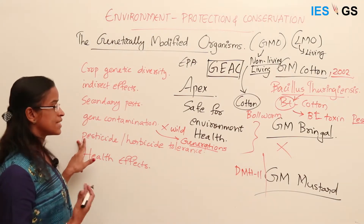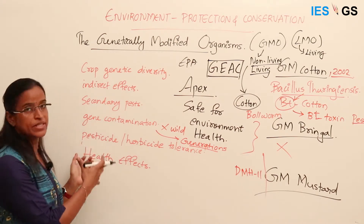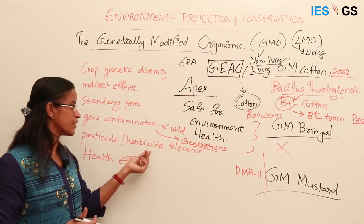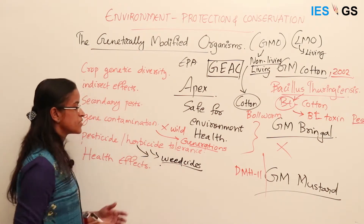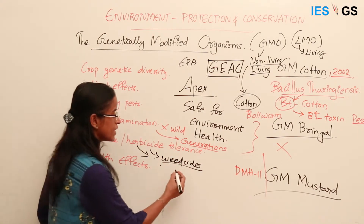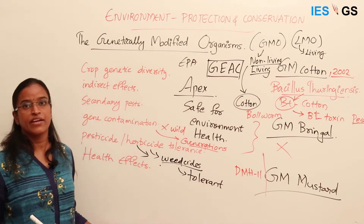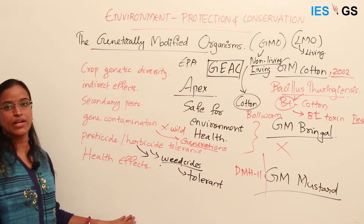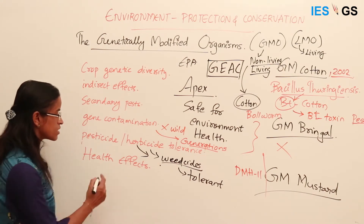GM plants can have herbicide and pesticide tolerance, meaning even when herbicides and pesticides are applied, these plants survive while other plants and pests die. Farmers may apply more of these products to protect their desired crops. Over time, weeds may develop tolerance and super-resistant weeds can evolve — similar to drug-resistant bacteria — becoming very difficult to control.